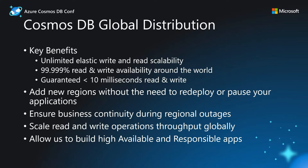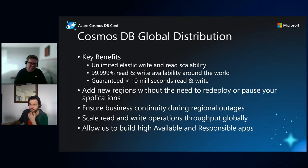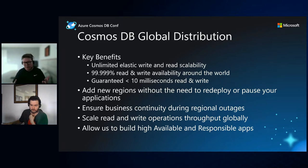With global distribution, there are key benefits to adopting it. One of the main benefits is unlimited elastic write and read scalability on our storage accounts. When we activate global distribution, we get regional availability around the world with an SLA of 99.99%, giving us a lot of availability with our Cosmos DB account depending on how we configure it.